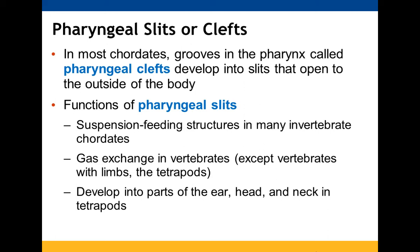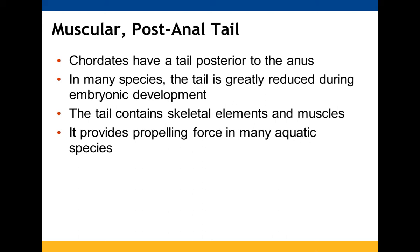Pharyngeal slits, or clefts, are another derived character. In vertebrates, the pharyngeal clefts function in filter feeding or gill development. The muscular post-anal tail is greatly reduced as it goes through development.